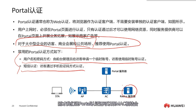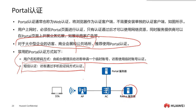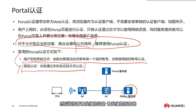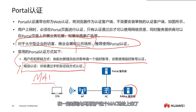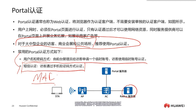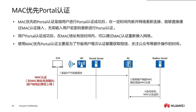Portal authentication can also be combined with MAC. You can first authenticate via SMS, allowing the user into the network. Immediately after, the server remembers the user's MAC address. For a certain period, as long as this MAC address comes up, it means they were already verified before, so there is no need to re-verify — just let them through. This is combining portal with MAC.